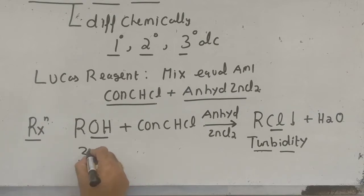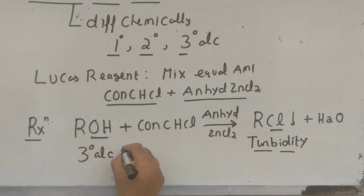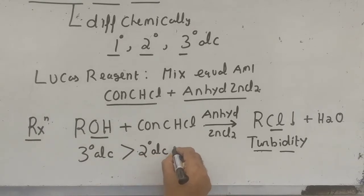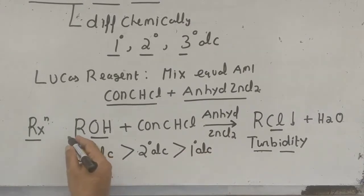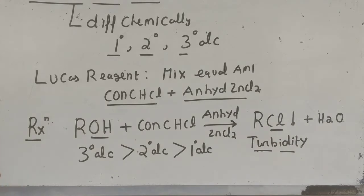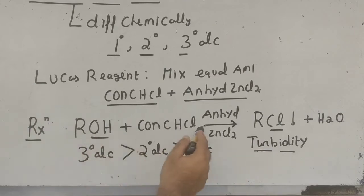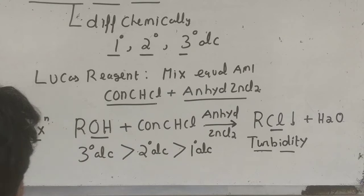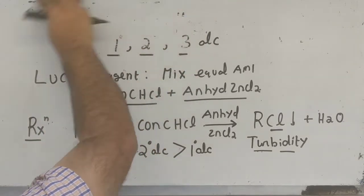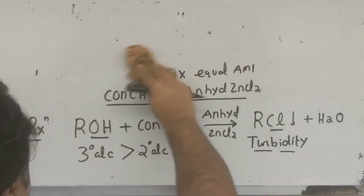The basis of the Lucas test is reactivity order: tertiary alcohol reacts fastest, followed by secondary alcohol, and then primary alcohol. You note the time it takes for haziness to appear. For secondary alcohol, turbidity appears in minutes; for primary alcohol, nothing happens until you heat the test tube.